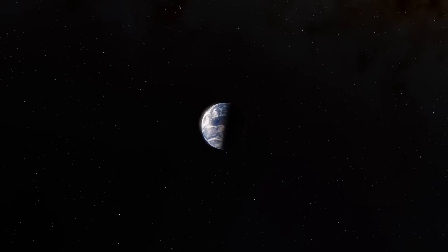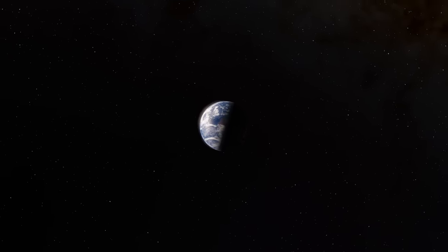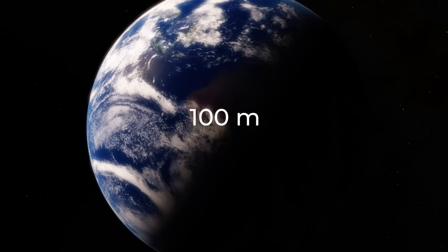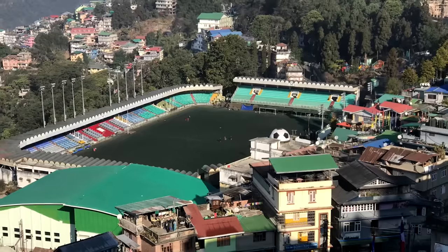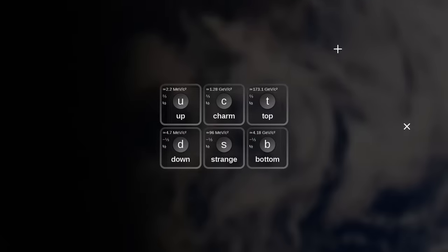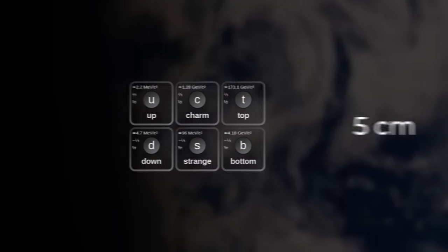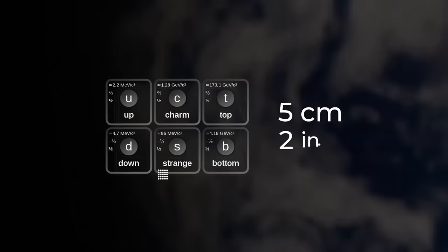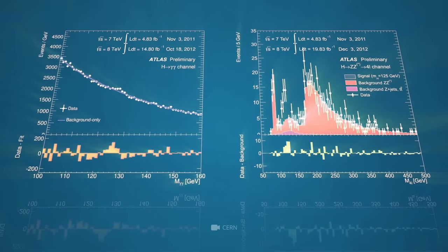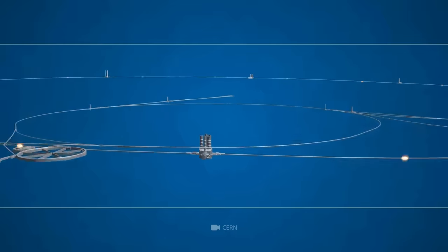Want to know how small they are? Imagine that an atom has grown to the size of the Earth. Then, a proton would have a radius of about 100 meters, or 328 feet. That's almost the length of a football field. In this case, the quark would have a radius of about 5 centimeters, or 2 inches. That is, it could fit in your pocket. But how can we examine such small particles? This is why the LHC was created.